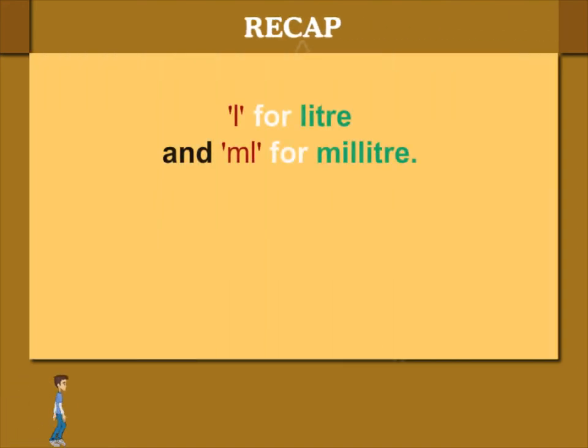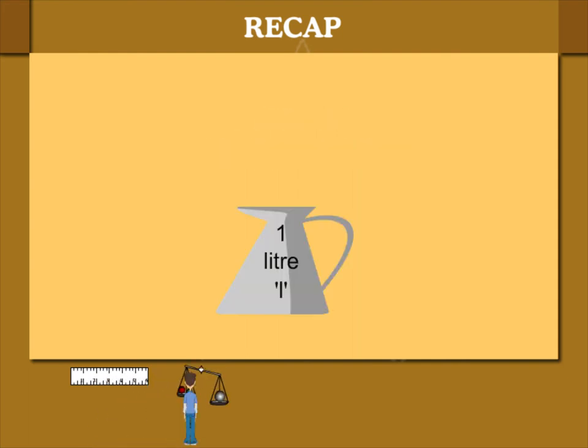Recap. L is used as a short form for liters and ML is the short form for milliliters. 1 liter is made of 1000 milliliters.